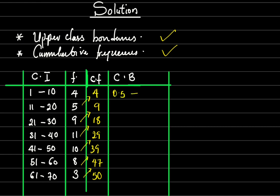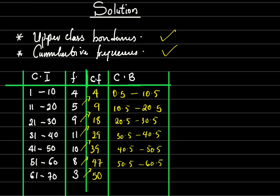Now we get our class boundaries (CB). The first boundary is 0.5 to 10.5, then 10.5 to 20.5, and so on, with the last one being 60.5 to 70.5. Now I have the two things I need — the upper class boundary and the cumulative frequency.